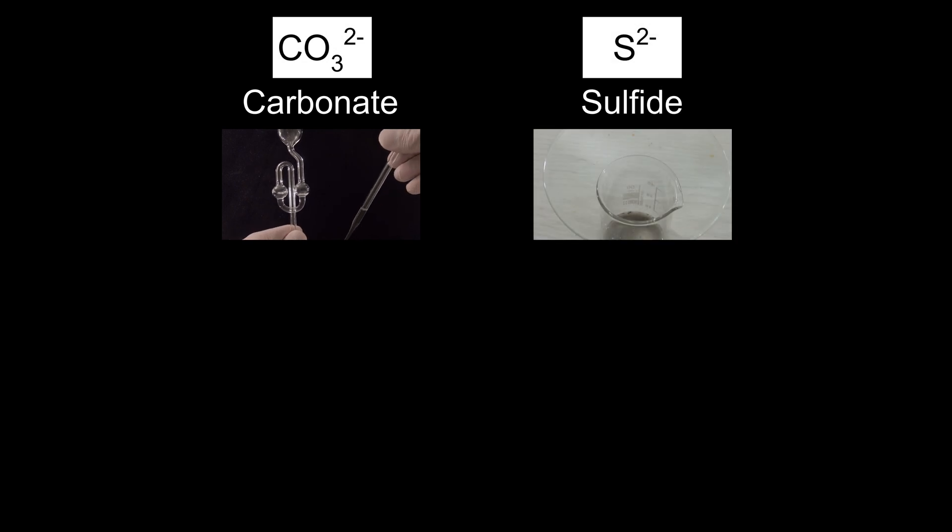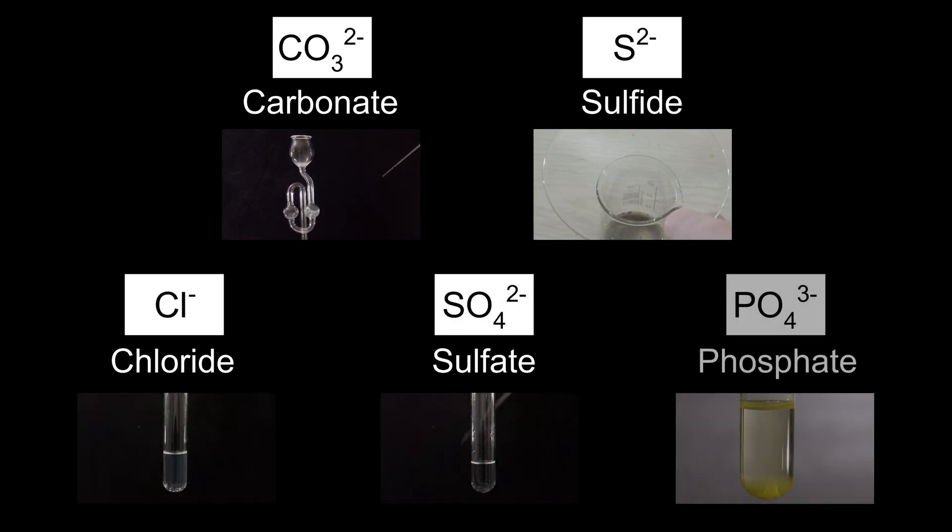In the wood ash, carbonate, sulfide, chloride, sulfate and phosphate were found. These are for sure not all the anions, but the most abundant ones in ash.